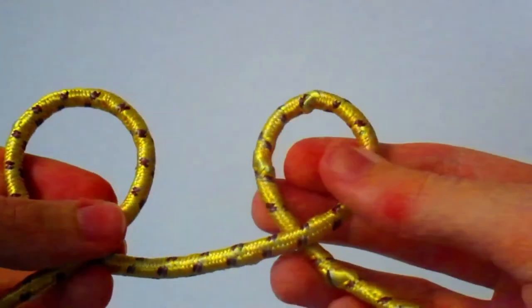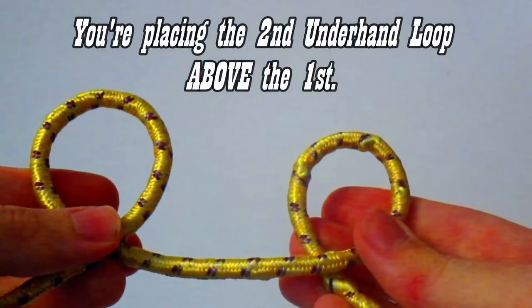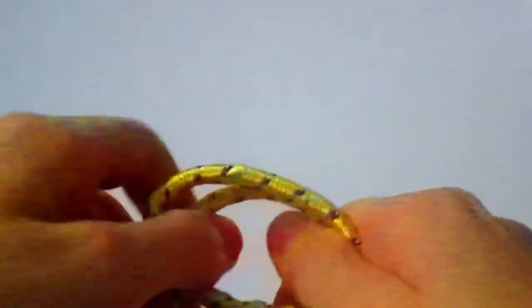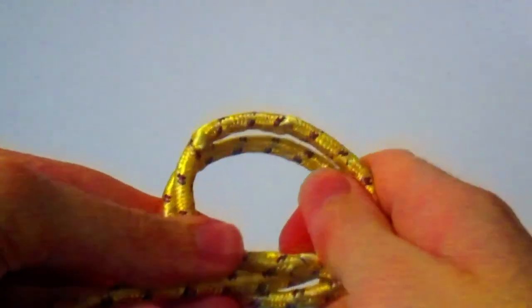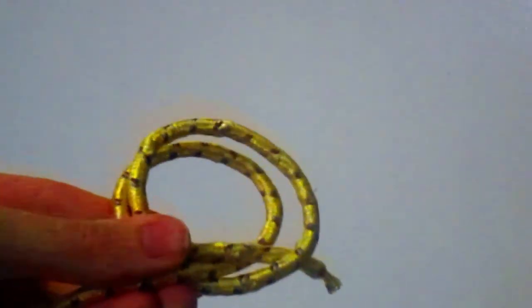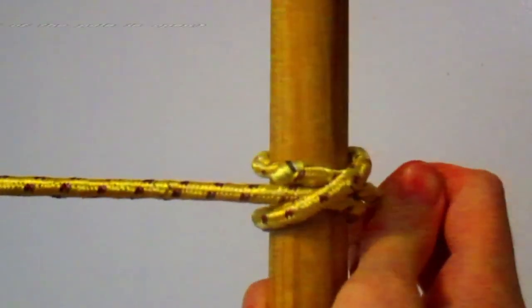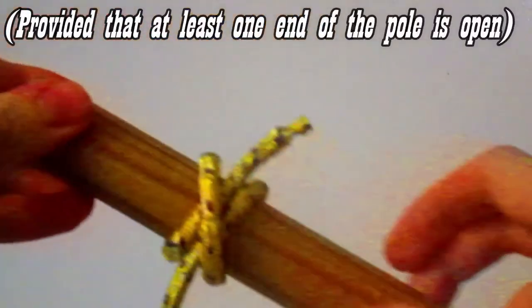A second underhand loop. Now, you put the second underhand loop over the first underhand loop and then simply take the pole and tighten, and you have a Clove Hitch.